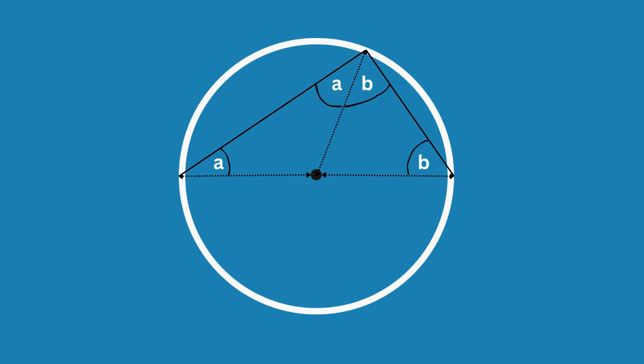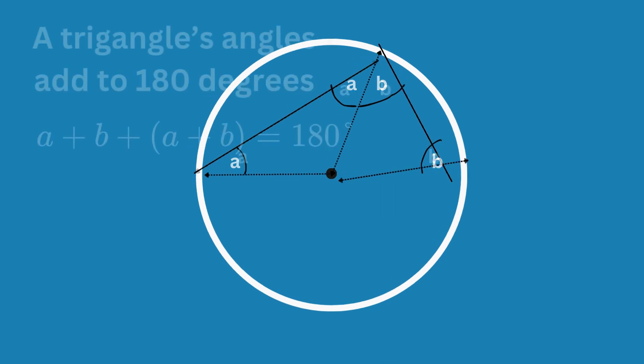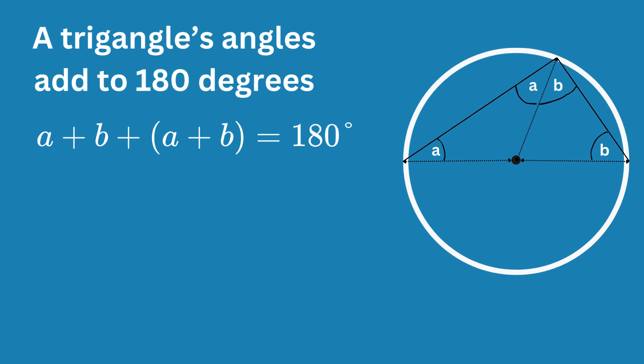Since the angles of a triangle always add up to 180 degrees, we can add all of these angles up for the original large triangle. Dividing each side of the equation that we've made by two gives us an expression for a plus b.